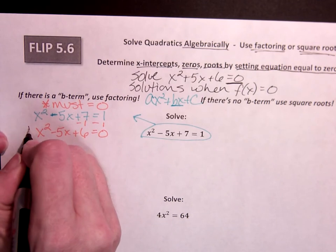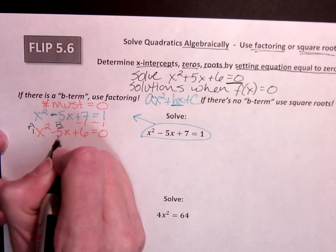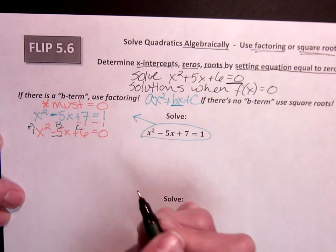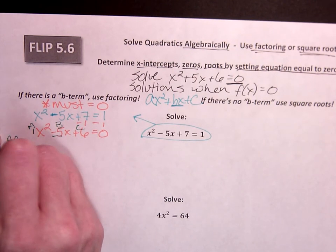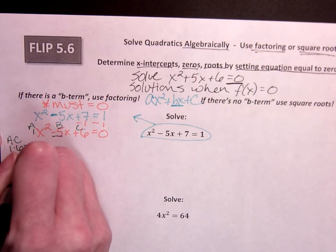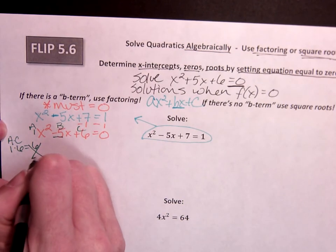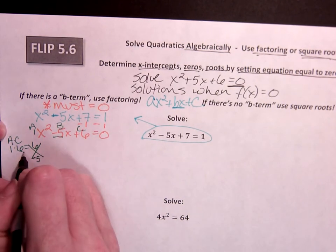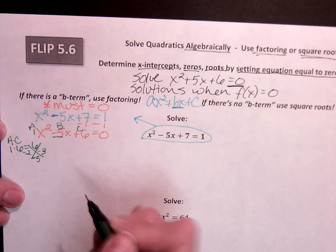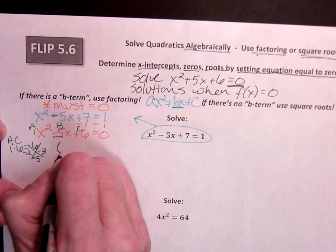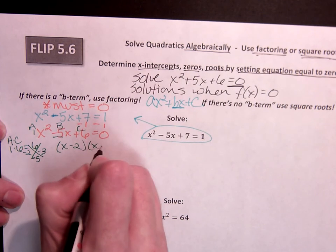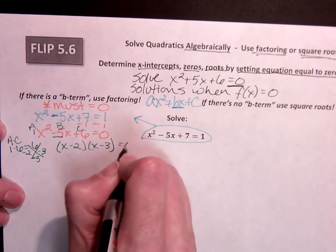So I'm going to look at a is 1, b is negative 5, c is 6. a times c is 1 times 6. I need factors of 6 that combine to negative 5. So we're going to use negative 2 and negative 3. So I can write x minus 2 times x minus 3 equals 0.